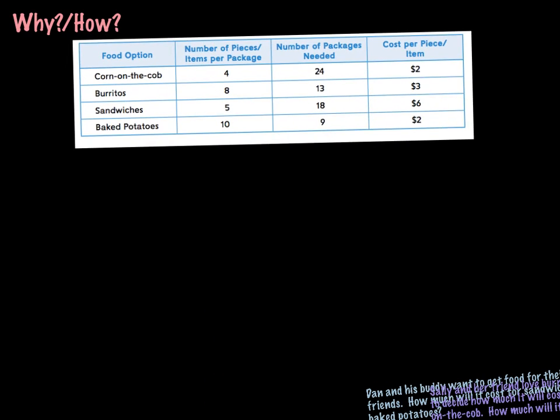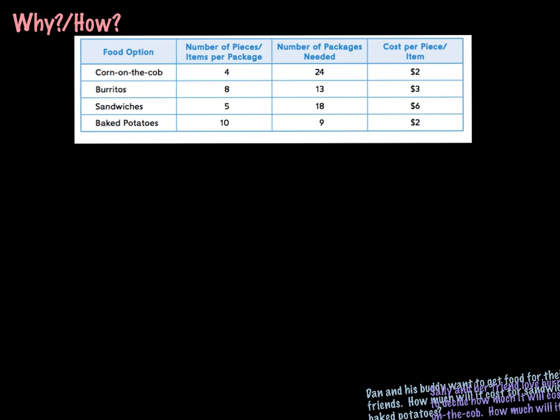And you're going to have one just like this in your book. And as you can see, we're looking at different kinds of food options, how many pieces and items are in a package, the number of packages that are needed, and the cost per item.